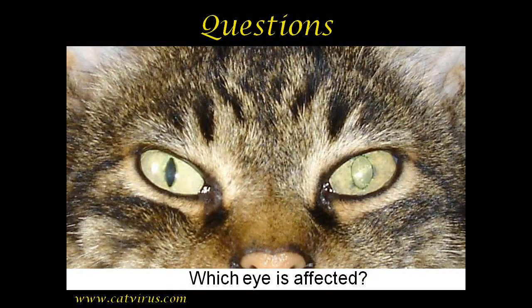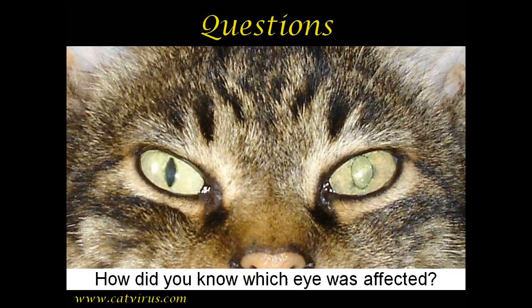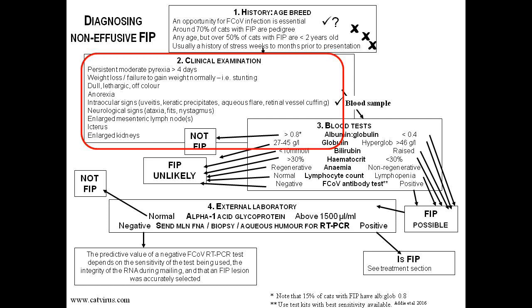The correct answer is that it was the left, not the right eye, which was affected, and you know that for two reasons. First, look at the iris colour — it is darker in the left eye. Second, look at the edge of the pupil in the left eye — it is uneven and irregular, but perfectly even in the right eye. Back to the FIP diagnosis algorithm: we now know to put a tick next to the intraocular signs rather than the neurological signs.